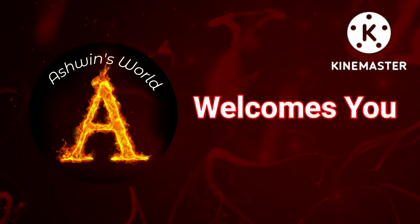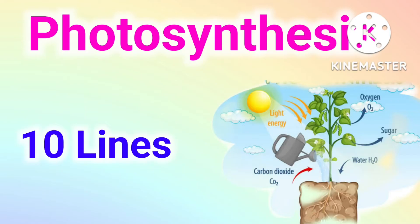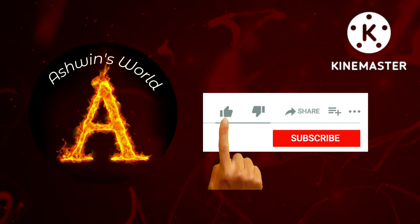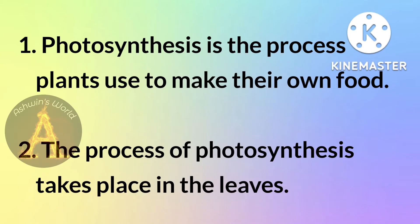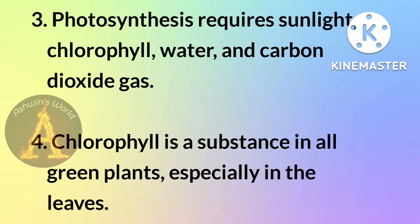Welcome to Ashwin's World. A few lines on photosynthesis — don't forget to like, share, and subscribe. Photosynthesis is the process plants use to make their own food. The process of photosynthesis takes place in the leaves. Photosynthesis requires sunlight, chlorophyll, water, and carbon dioxide gas.